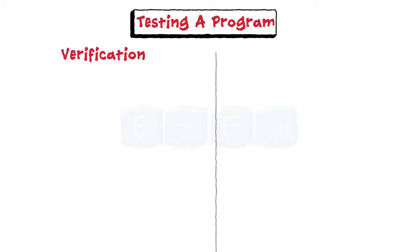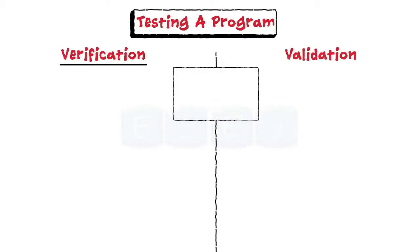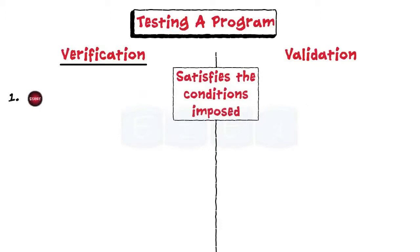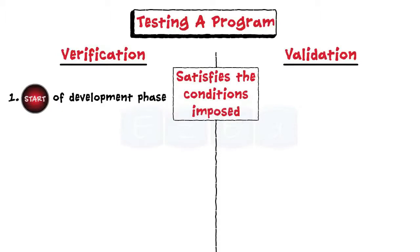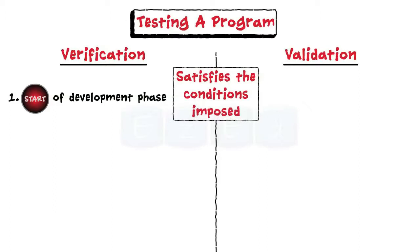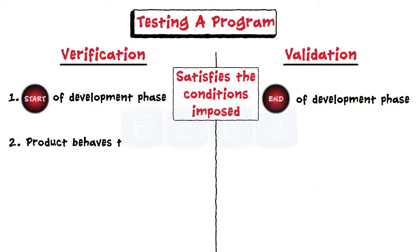What is verification and validation? Verification is a process to make sure the product satisfies the conditions imposed at the start of the development phase, while validation is the process to make sure the product satisfies the specified requirements at the end of the development phase. In other words, verification is to make sure the product behaves the way we want it to.